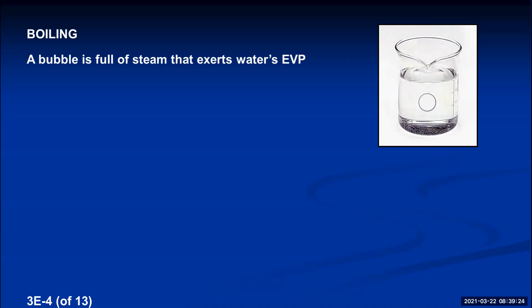Inside the bubble, the water vapor exerts a pressure against the inside walls of the bubble equal to water's equilibrium vapor pressure. When you watch something boil, bubbles form at the bottom, rise, and then disappear. The bottom of the container is hottest, so equilibrium vapor pressure is highest there. As bubbles move up into cooler water, EVP decreases and the bubble gets squeezed down to nothing. A bubble can only survive if the pressure inside equals the pressure outside — meaning EVP must equal atmospheric pressure.